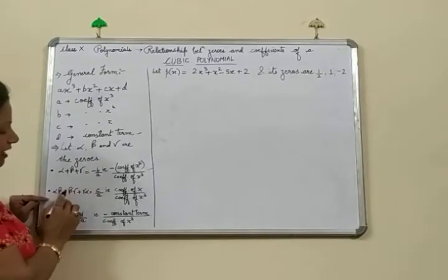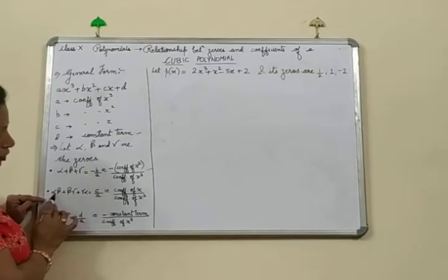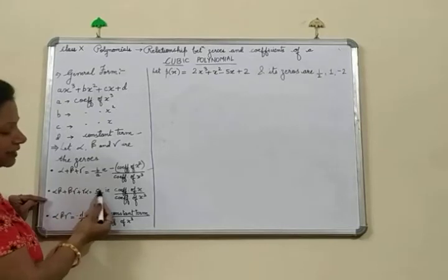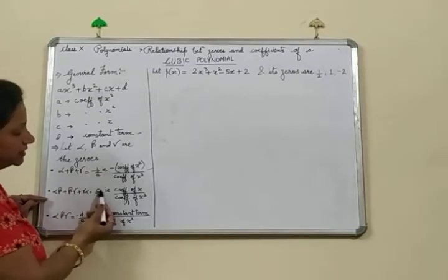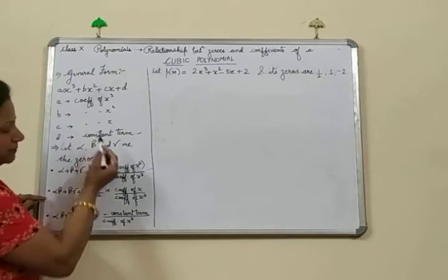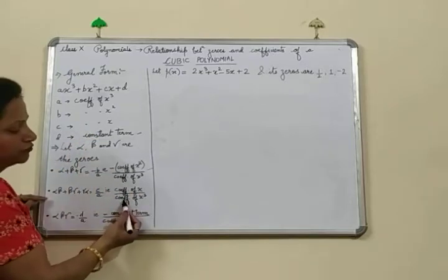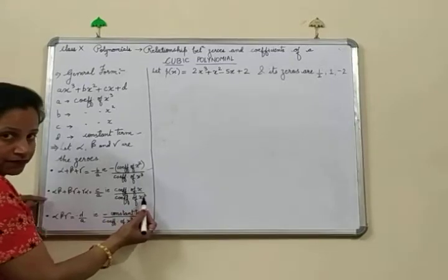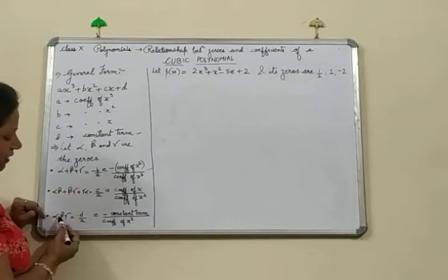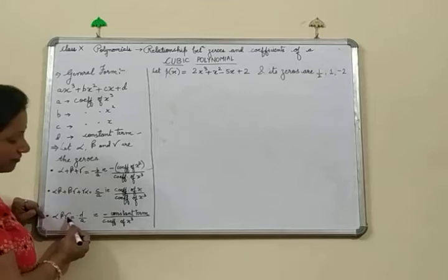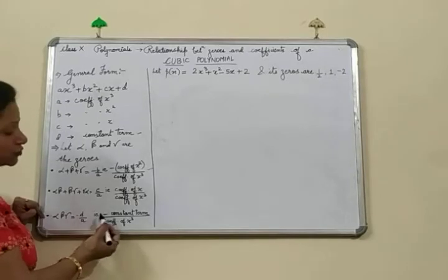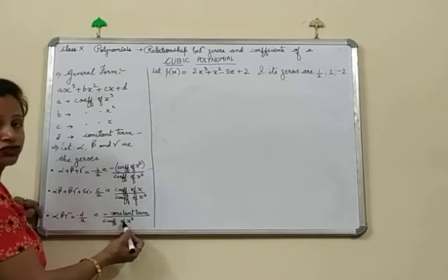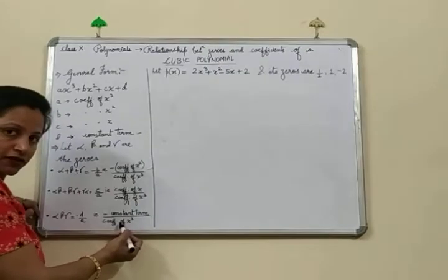We also have the sum of product of two of the zeros, and it is given by c upon a. That is, c is the coefficient of x, so it is coefficient of x upon coefficient of x cube. And lastly, we have the product of the zeros — alpha, beta, and gamma — which is given by minus d upon a. And d is our constant term, so we can write minus constant term upon coefficient of x cube.